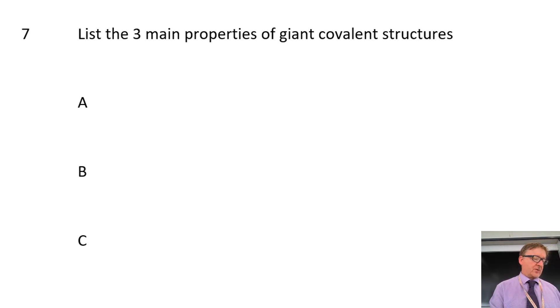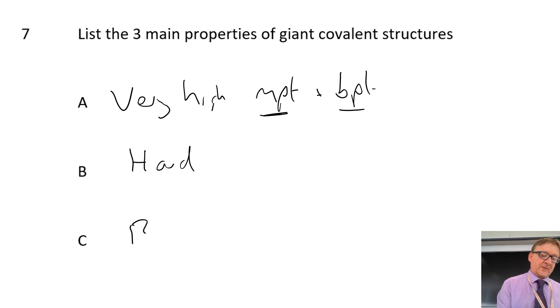There's three main properties of giant covalent structures. So giant covalent structures, they have very high melting and boiling points. Don't ever write MPT or BPT, because that's proper cheating. They are usually hard, and they are often brittle. So a good example of this could be silicon dioxide, which is sand.